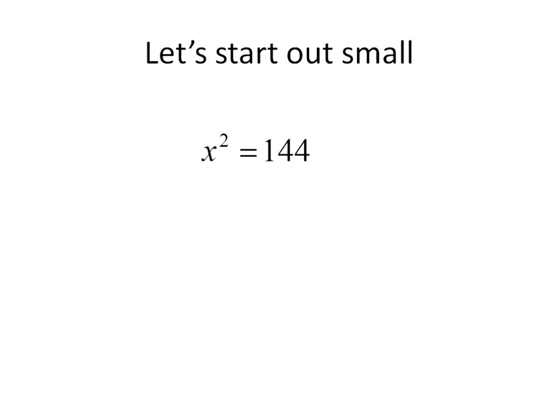x squared is equal to 144. Looking at this, you can probably tell me x is equal to 12 — 12 squared is 144. The way that we actually solve this is to do the inverse or the opposite operation. The inverse of x squared is to take the square root of x. So we take the square root of both sides — again, you're seeing that property of equality and inverse operations right here. The square root of x squared leaves us with x on the left side. The square root of 144 is 12, technically plus or minus 12, but we're just going to write the positive value. So x is equal to 12.